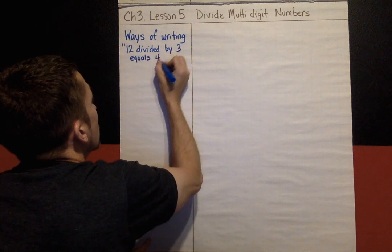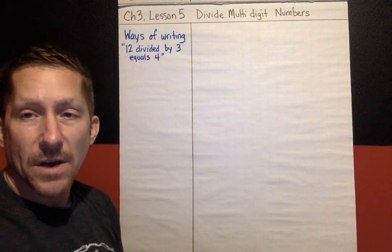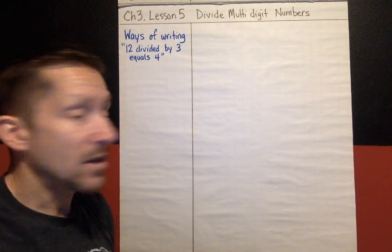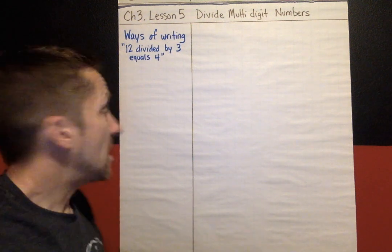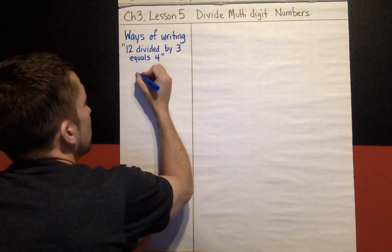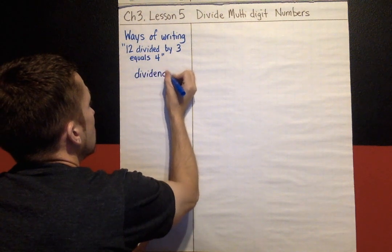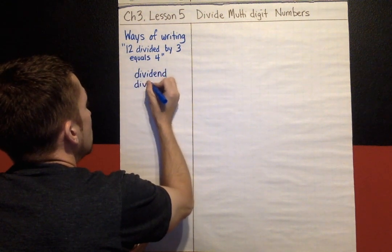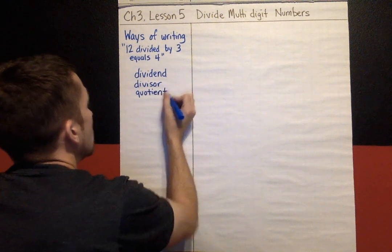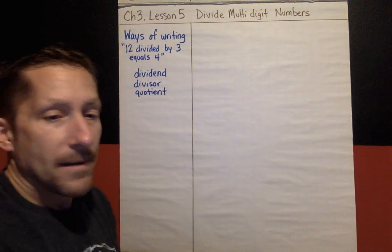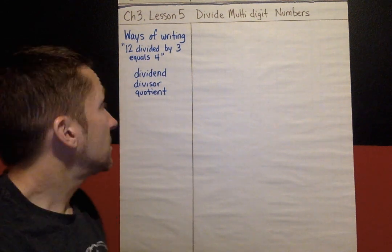So I'm going to write that over here. I'm going to use for our example the ways of writing 12 divided by 3 equals 4. So I'm going to show you three ways to write 12 divided by 3 equals 4. And we're also going to learn some key terminology when it comes to dividing. We are going to talk about these key vocabulary words: the dividend, the divisor, and the quotient. If you don't know what any of these words are, you will after this explanation.